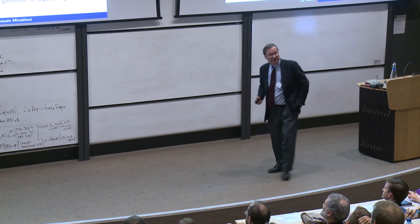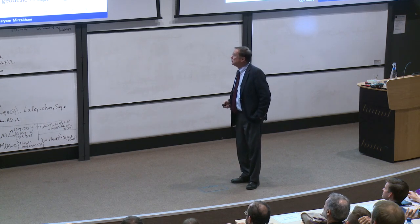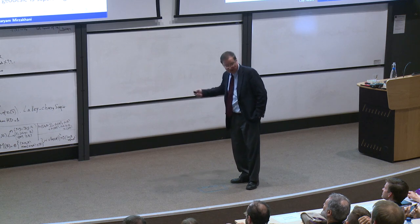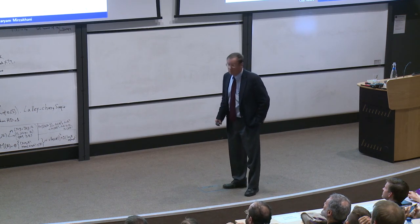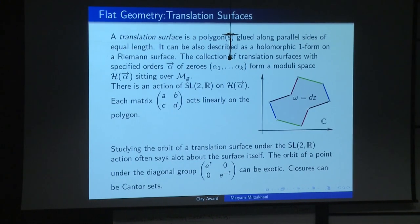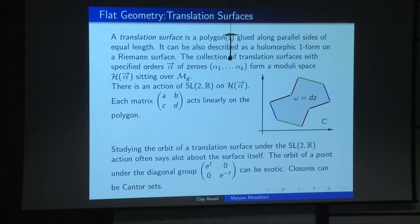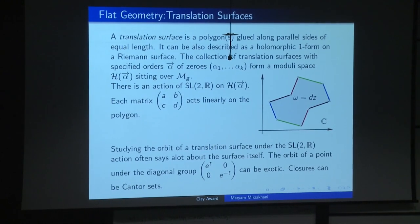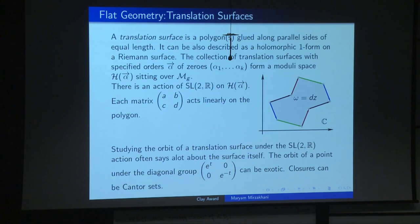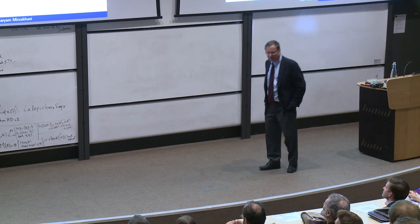That's my three-minute description of hyperbolic geometry. Now let me go to another theme in her work: flat geometry, also sometimes called translation surfaces. Before we had hyperbolic geometry with curvature minus one; now we study translation surfaces. What's a translation surface? As Anton Zorich drew, you look at a polygon on the right, and opposite sides are identified if they're parallel and of the same length — the blue sides are identified, the red sides, and so forth. This is an example of a translation surface.